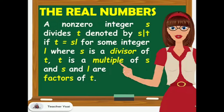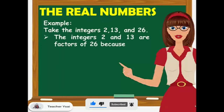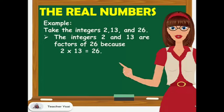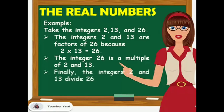To understand this definition, let us have this example. Take the integers 2, 13, and 26. The integers 2 and 13 are factors of 26 because 2 times 13 is equal to 26. And the integer 26 is a multiple of 2 and 13. Finally, the integers 2 and 13 divide 26 — that is, 2 divides 26 and 13 divides 26.